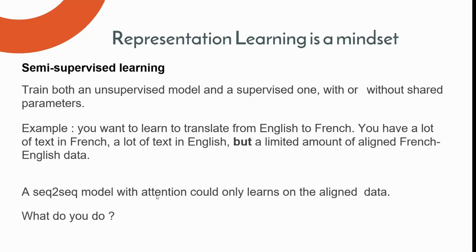For semi-supervised learning: if you want to build a translation model from English to French but don't have enough pairwise data, a possible solution using a sequence-to-sequence model is to first train the encoder as a language model using only English data, then train the decoder as a language model using only French data, and finally fine-tune the full seq2seq model on the French-to-English pairwise data.